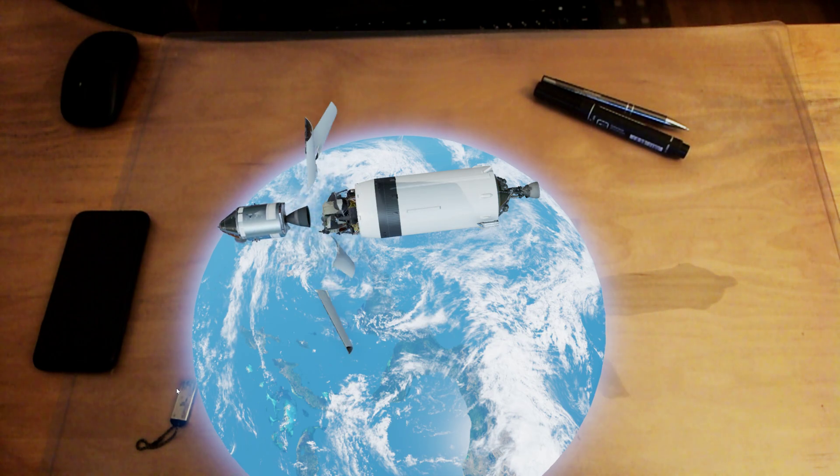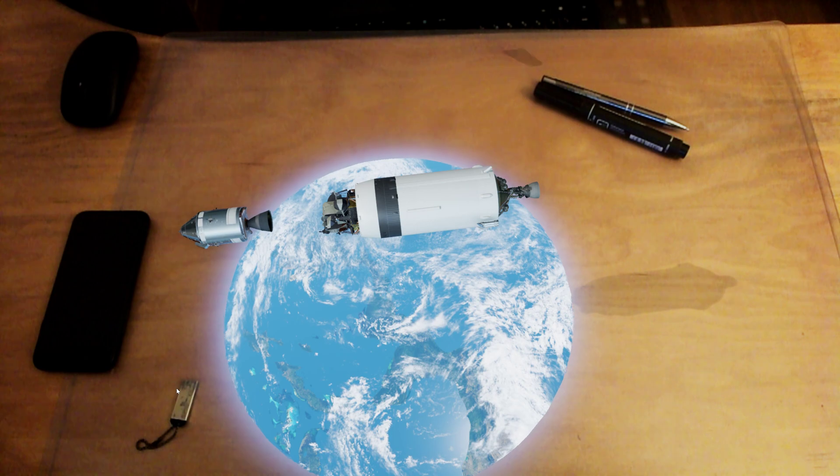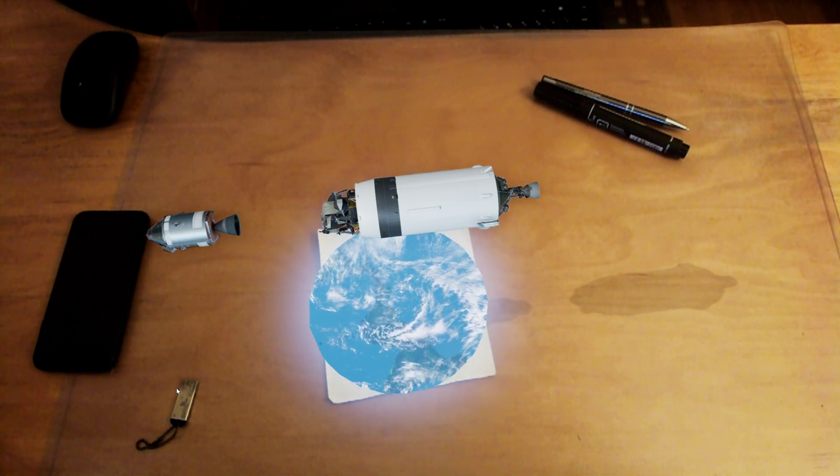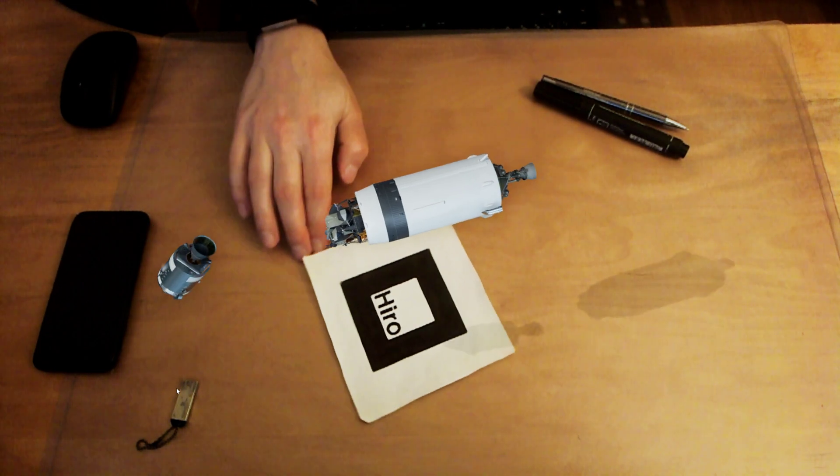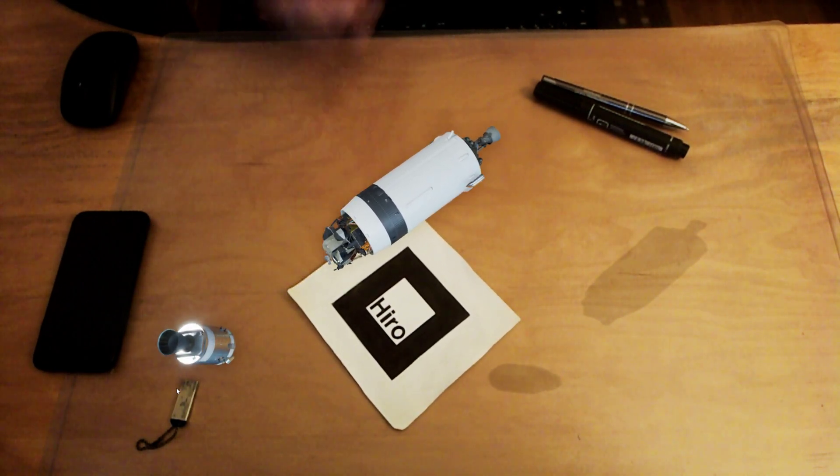Apollo 11, this is Houston. You are go for separation. Shortly after leaving Earth orbit, the command and service modules separated from the now-expended third stage and then turned around to extract the lunar module.